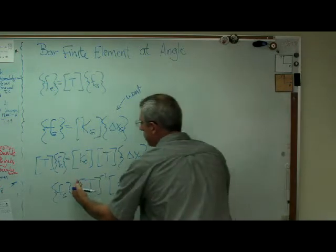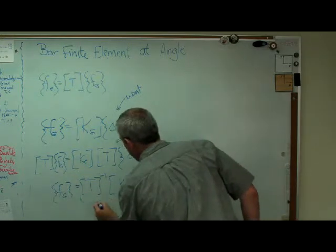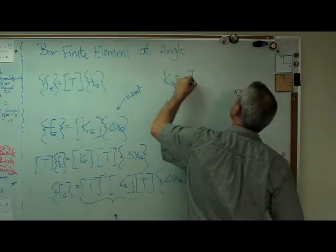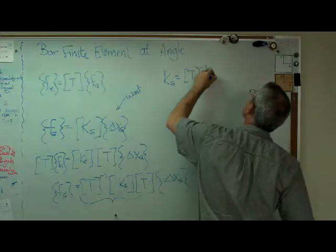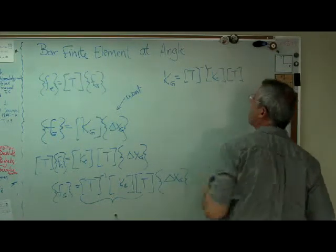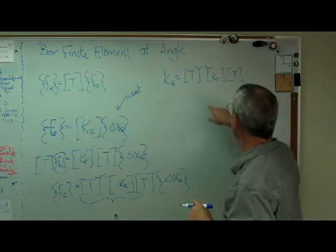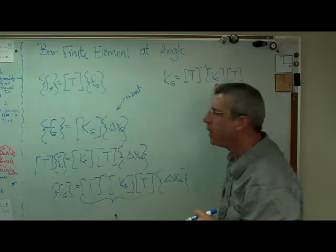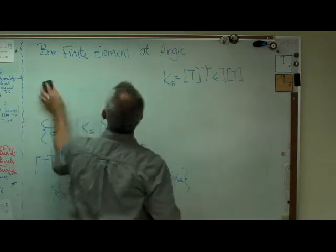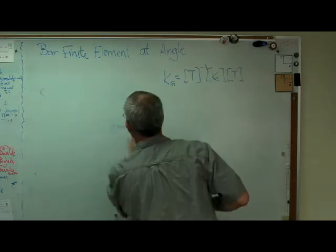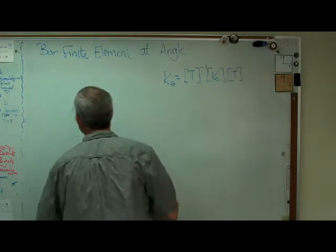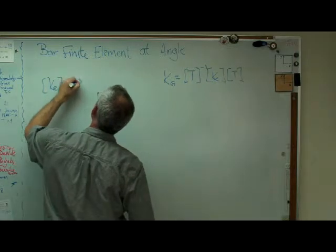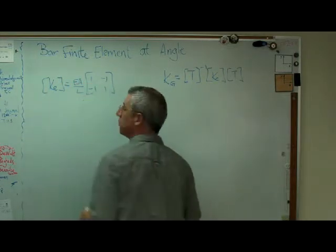That's the global stiffness matrix. Now, there's one last step here. If you're maybe getting ahead of me a little bit, you're going to say, well, that's four by four and that's four by four, four by four. But the last time I looked at that, it was two by two, right? I'm going to clear some space out here. The last time I wrote the element stiffness matrix, it looked like this. And it did. That's exactly what it looked like. And the reason it looked like that is because there was no displacements in the y directions at either end.